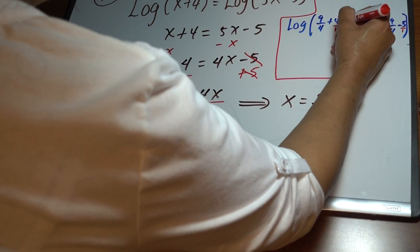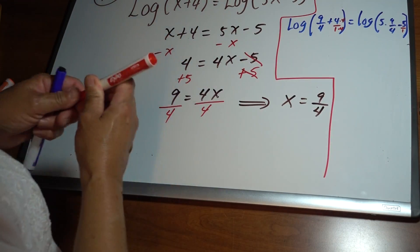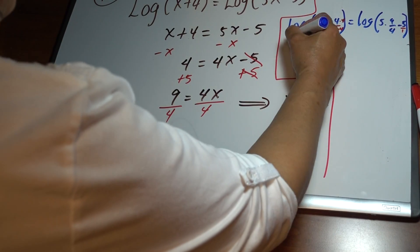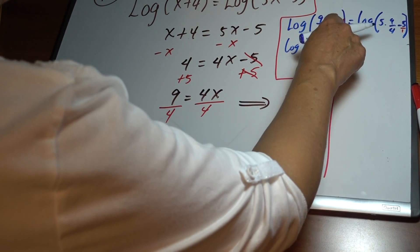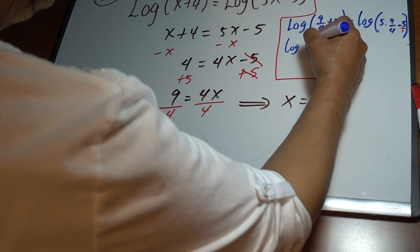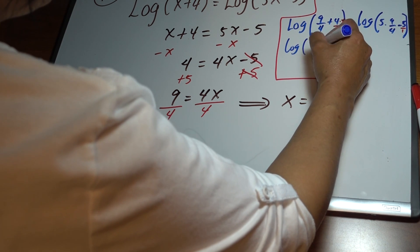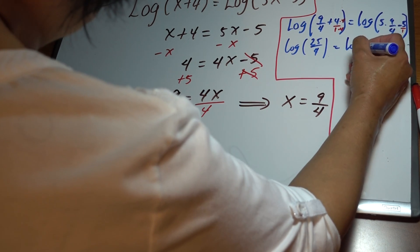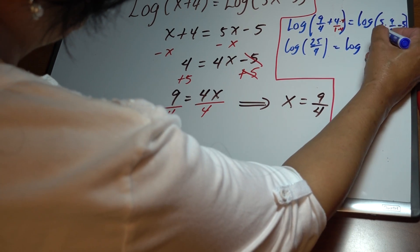So we have log of 9 plus 4 times 4, which is 16, giving us 25 fourths, equals log of 5 times 9, which is 45 fourths.